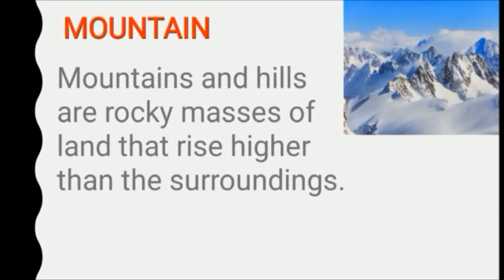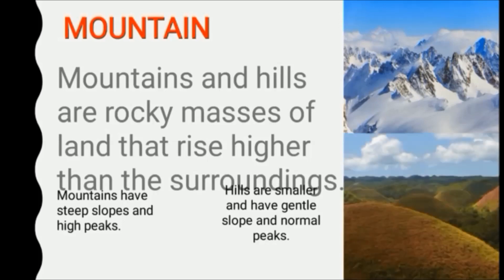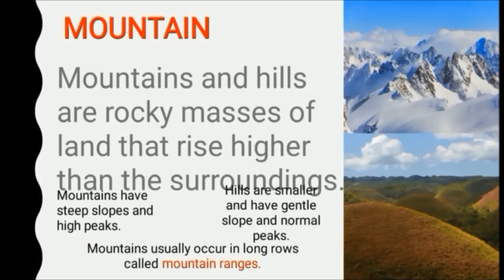Let's know what are mountains. Mountains and hills are rocky masses of land that are higher than the surroundings. The main difference between mountain and hill is that mountains are high, they have steep slope — that means they are highly inclined — and they have a high peak.